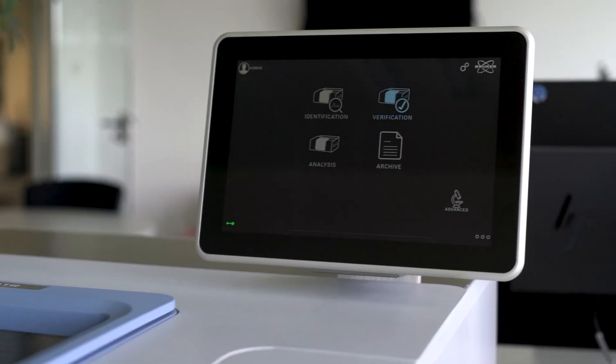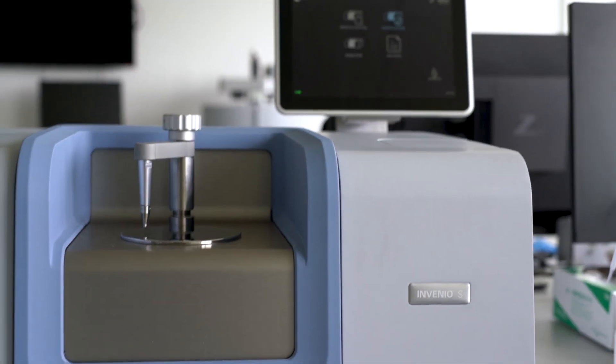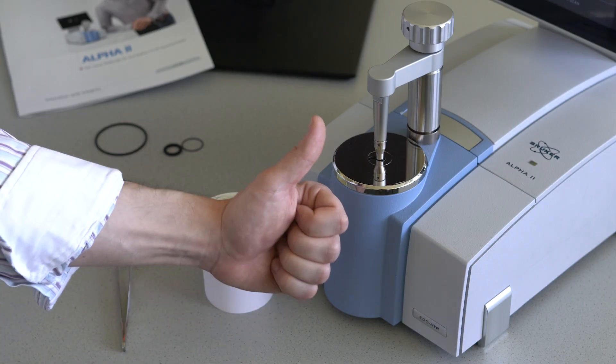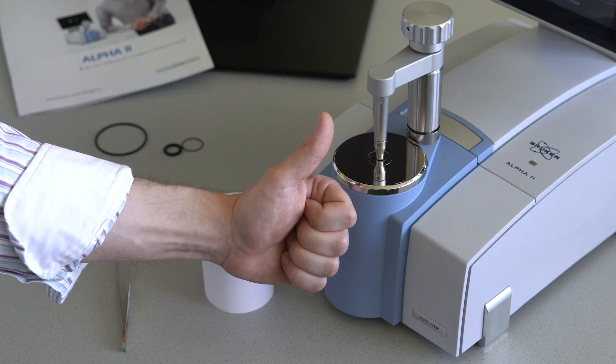This way, FTIR spectroscopy helps you localize disruptions in your production process, giving you the chance to remedy them before they pose a risk to customers or a company's reputation.